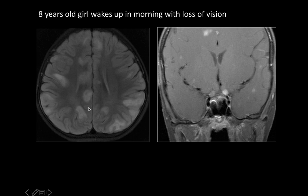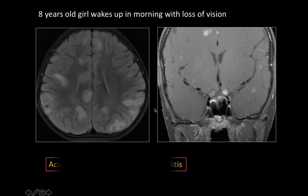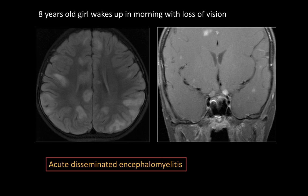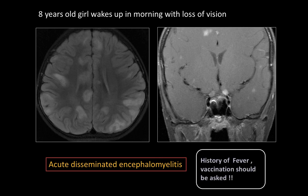This is an 8-year-old girl who woke up with acute onset of loss of vision. On FLAIR axial imaging we see multiple cortical, juxtacortical, and deep white matter lesions which are very large, along with enhancement of the optic chiasm — optic neuritis associated with these brain lesions. This is acute disseminated encephalomyelitis or ADEM. The patient had a history of fever and vaccination a few days prior, making that history extremely important.